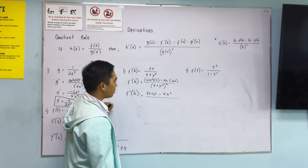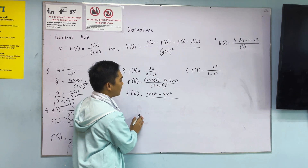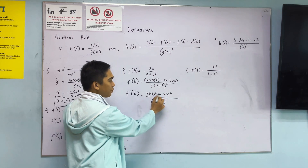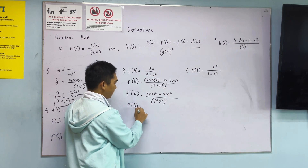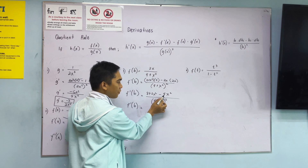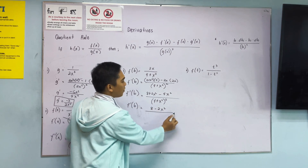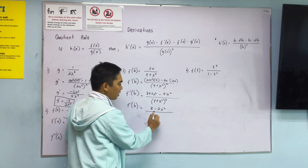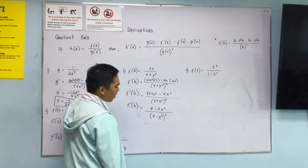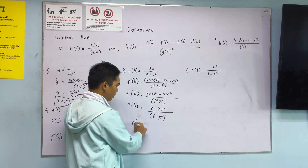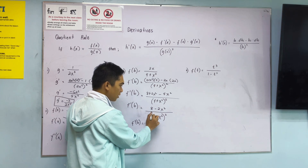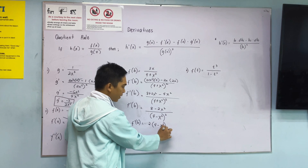Next: 2 times 4 is 8, plus 2x squared. Then minus 4x squared. Over low-low squared. Simplify the numerator: 8 minus 2x squared, since 2 minus 4 is negative 2. All over 4 plus x squared squared. Now factor out: the factor is 2 times 4 minus x squared.